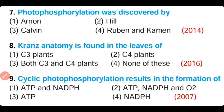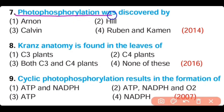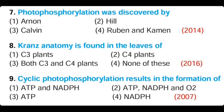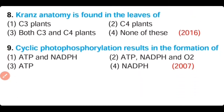Question number 7. Photophosphorylation was discovered by: Arnon, Hill, Calvin, or Rabin and Kammin. The correct answer is option 1. Arnon was the scientist who discovered photophosphorylation. During this process, ATP is synthesized by using light energy.